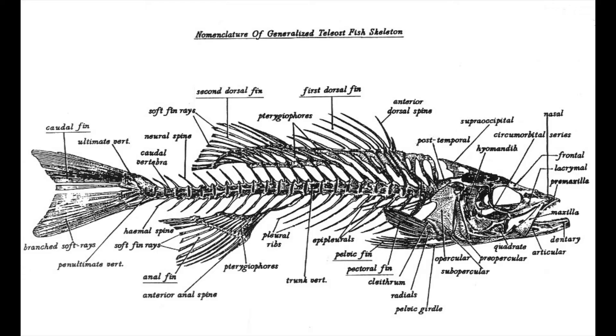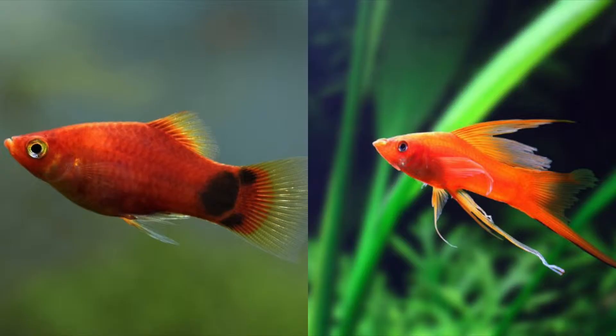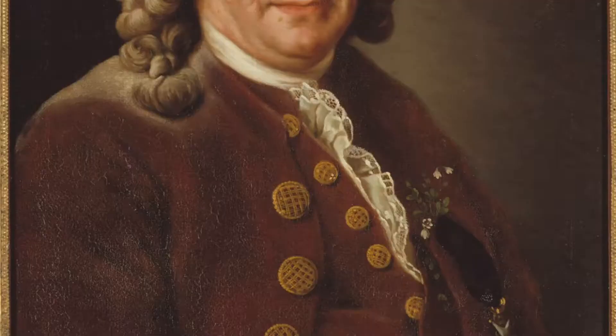The way that scientists have approached cladograms has been by looking at morphological, or physical, traits. One fish may have fancy fins, while more distant relatives may have less fancy fins. This is relatively easy, and scientists have been doing this for hundreds of years.